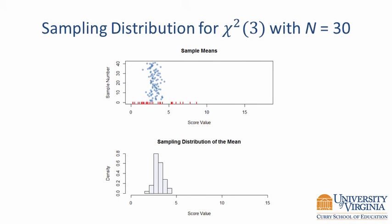The sampling distribution now appears to be much more symmetric and more closely resembles a normal distribution. According to the central limit theorem, the sampling distribution will become more normally distributed as the sample size increases. Once you have a sample of about 30 observations, the sampling distribution reasonably approximates a normal distribution.